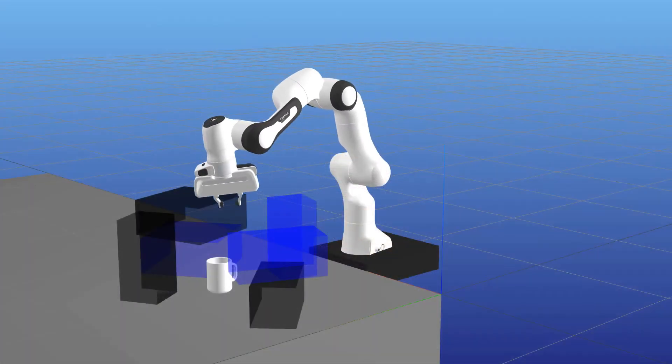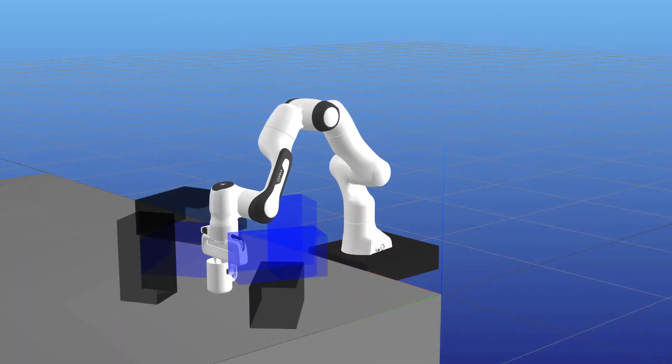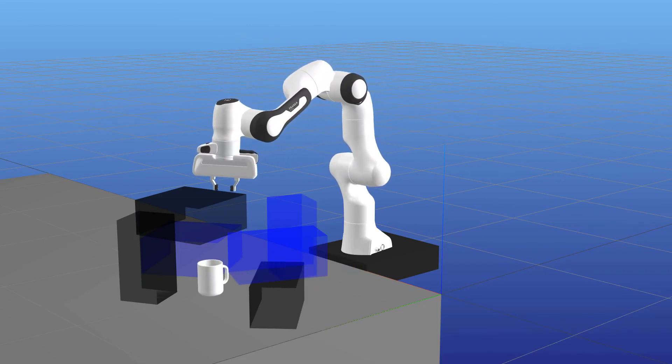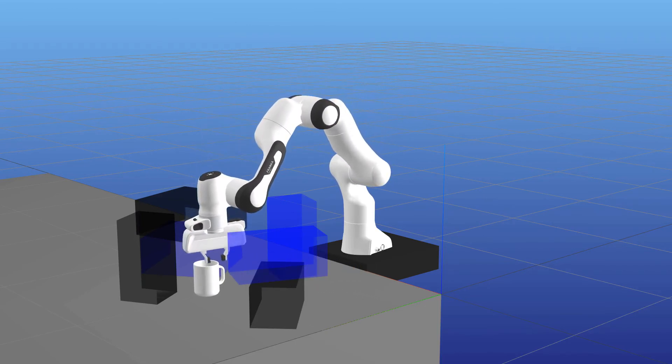We also demonstrate the approach on a more complex manipulator arm task, with an arm grasping a cup among clutter and reactively following the cup when it is in motion. For more details, there is a link to the extended version of the paper in the description below. Thank you.